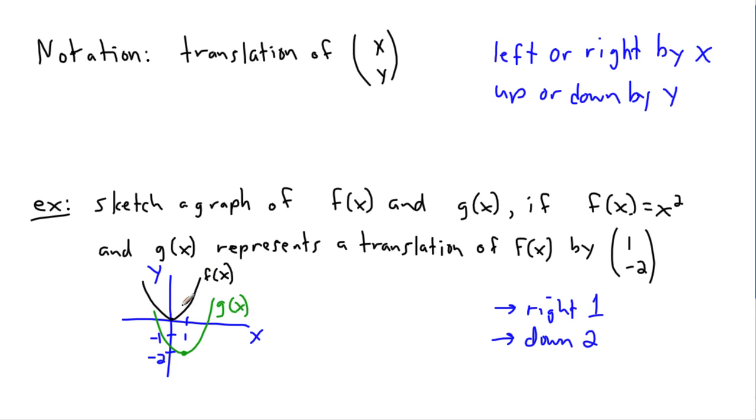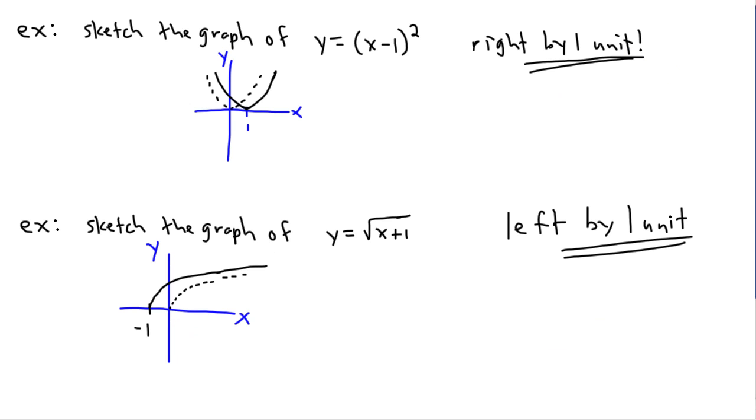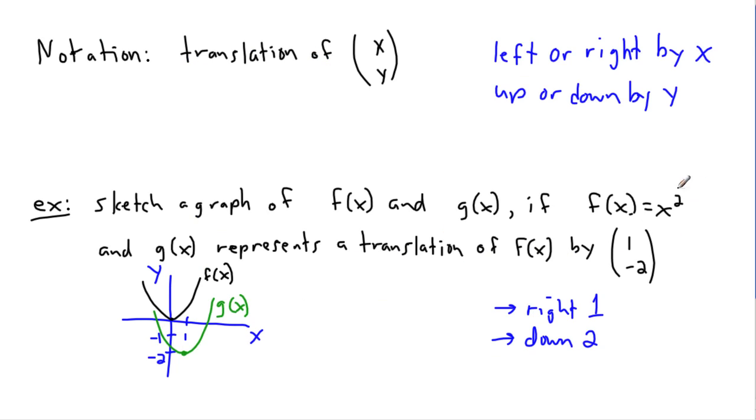g of x looks just like f of x, except you took this point and shoved it to the right and yanked it down by 2. We could also write that the same thing. What's the equation for g of x? I can actually use what we've just learned. If I really wanted to write g of x, I take f of x which is something squared. I know for sure I went down by 2, so I have a minus 2 at the end. The question is do I go left or right?